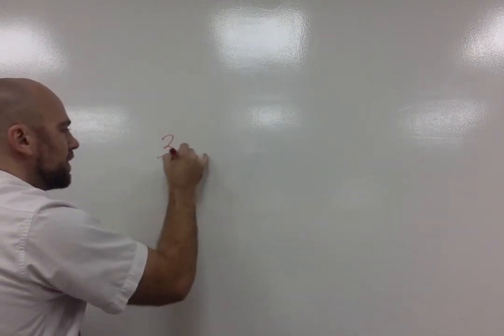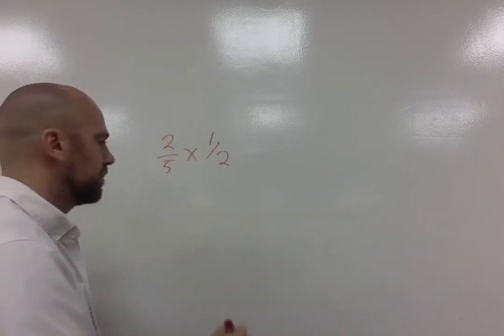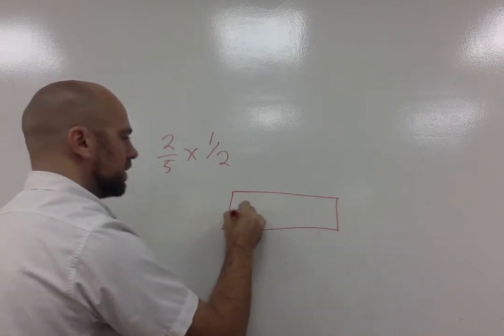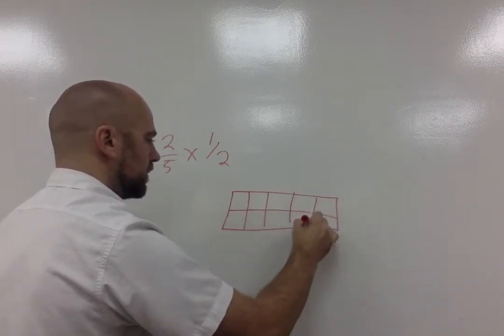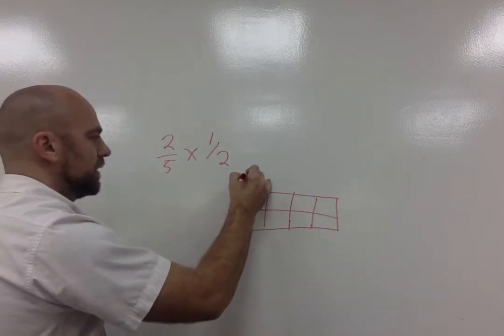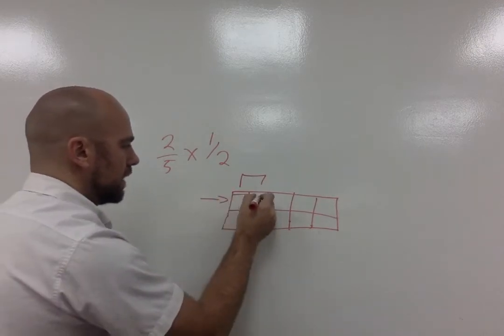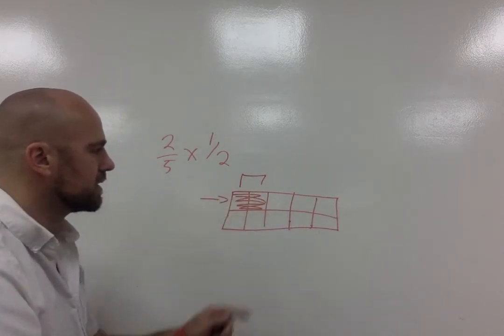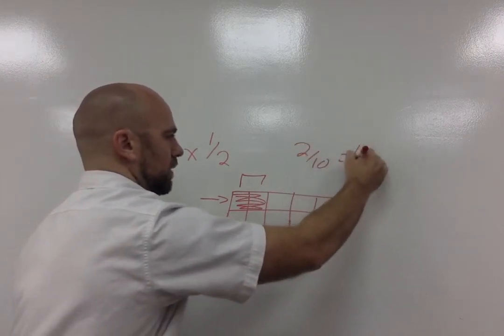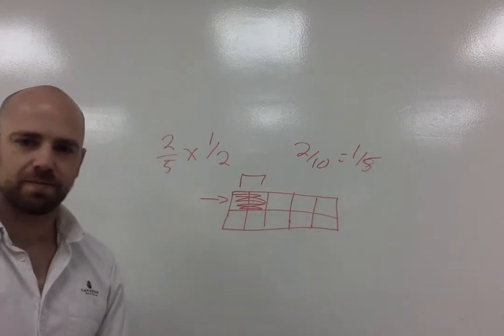Let's do two fifths times one half. So like I said, feel free to pause. In this one, I have to have two fifths. So it's going to be here and I'm going to have this one. So I'm going to end up with something like this, which is going to give me two out of ten or one fifth.